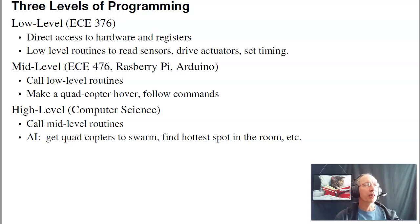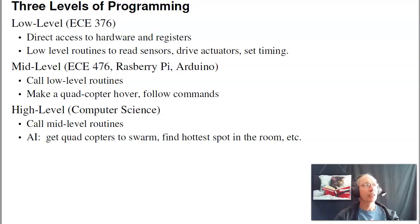Mid-level programming is what you get in the next course, Advanced Embedded — ECE 476. It's also what you see with the Raspberry Pi and Arduinos. Somebody has already written the low-level routines, and now you write calling routines — I call something to drive an output pin at 1 kHz, I call a routine to read the analog input. That's mid-level programming, which lets you do things like make a quadcopter hover and follow commands. There's also high-level programming, typically done in computer science — things like artificial intelligence. That's a routine that calls mid-level routines, which call low-level routines. For example, getting a bunch of quadcopters to swarm and do a gradient search to find the hottest spot in the room. This course focuses on low-level programming.